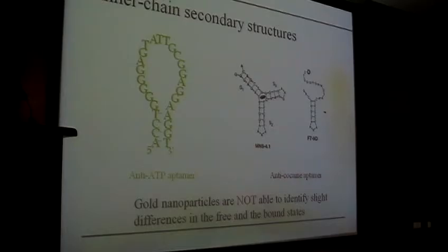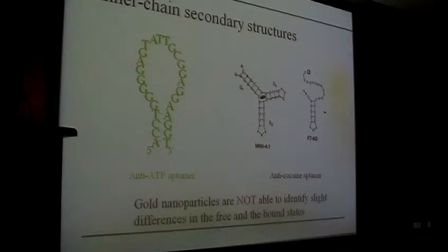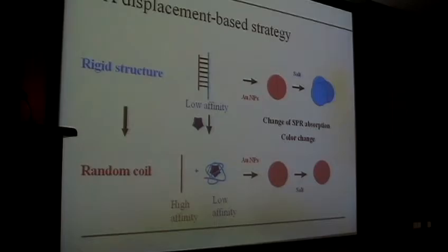This method is very simple. However, it cannot be used for more complicated structures. For example, the ATP aptamer and the cocaine aptamer are more complicated than simple metal ion aptamers. Even in the absence of the target, they contain a certain secondary structure, so they are also rigid. Gold nanoparticles just cannot distinguish between these two structures.